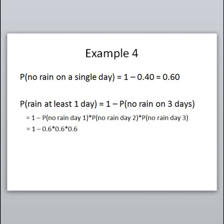To find the probability of no rain on three days, we multiply: probability of no rain on day one (0.6) times no rain on day two (0.6) times no rain on day three (0.6). So the probability it does not rain on three consecutive days is 0.6 × 0.6 × 0.6. Then the complement rule gives us the final answer: the probability of rain on at least one day is 1 minus 0.6 × 0.6 × 0.6.